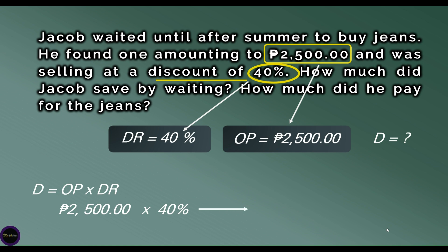Let's convert the percent to a decimal number. To convert percent into a decimal number, locate the decimal point at the rightmost side of the whole number, then move the decimal point two places to the left. Remove the percent symbol. So 40% is equal to 0.40.